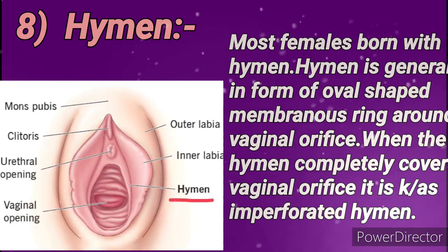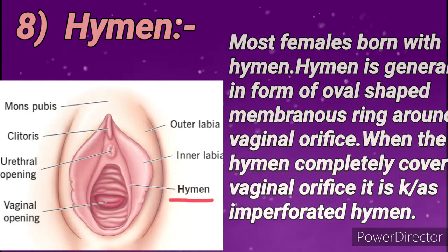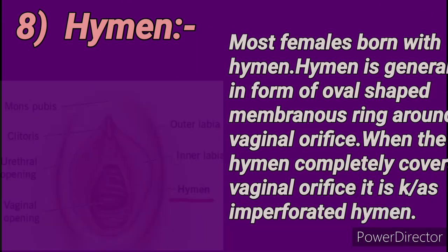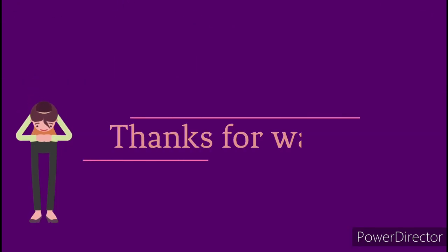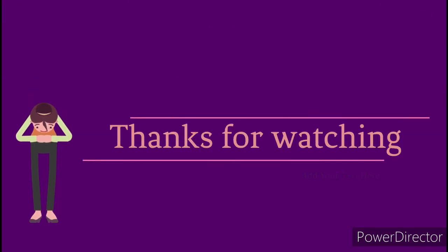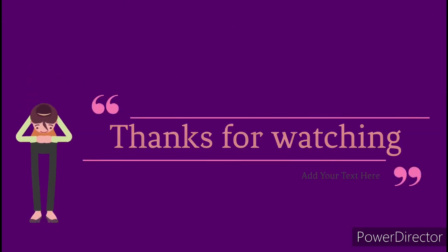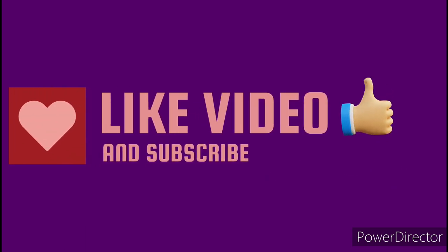Now comes the hymen. Most females are born with a hymen. The hymen is generally in the form of an oval membranous ring around the vaginal orifice. When the hymen completely covers the vagina, it is known as an imperforate hymen. That's all about external female genitalia — thanks for watching, please like and subscribe.